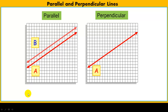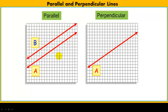Parallel lines are two lines that, in a two-dimensional plane, never intersect. We presume they go on into infinity and never cross. That's a special pair of lines. Most lines will cross somewhere in two-dimensional space, no matter how parallel they may look. If they are not by definition parallel, they will cross somewhere.